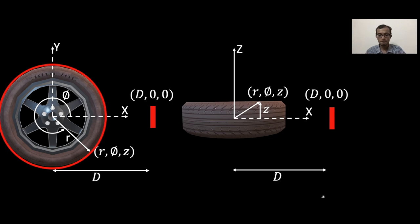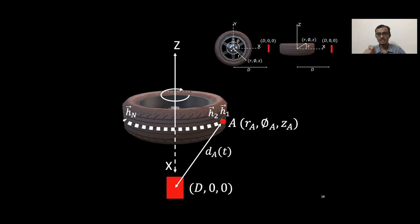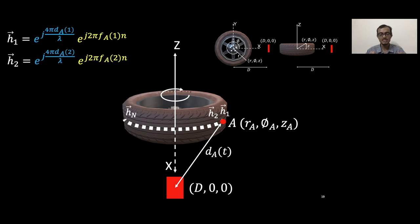Let's consider an imaginary point which is on the tire and observe how its reflections change as it rotates. Obviously, the distance from the point to the radar changes as it rotates, and this is why we encapsulate the distance changing in this channel model.